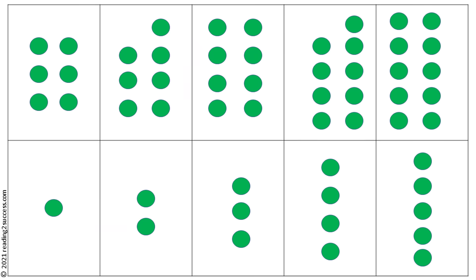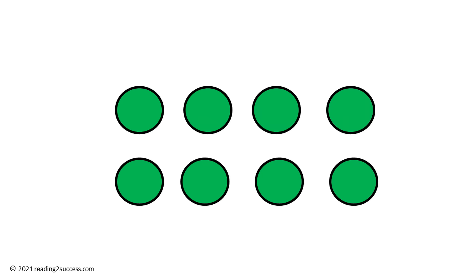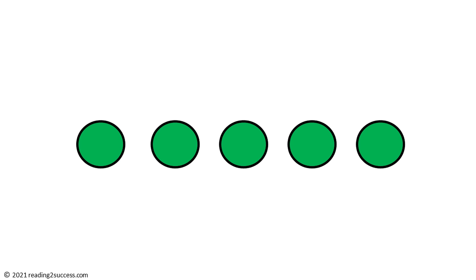It is also important to flash them in random order so kids do not memorize them in their counting order: 10, 1, 2, 9, 3, 8, 4, 7, 6, 5.